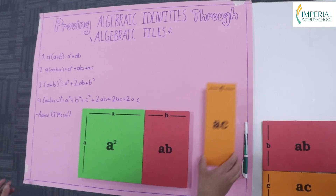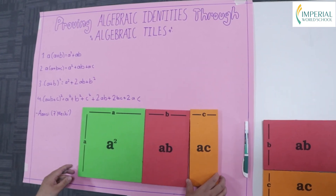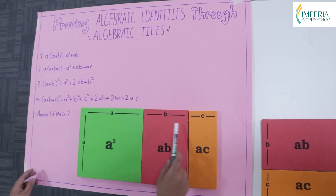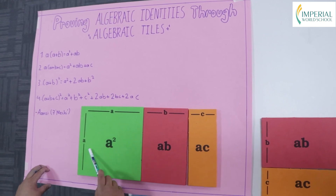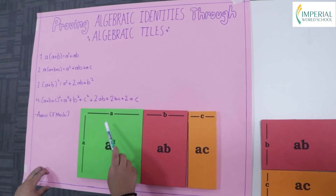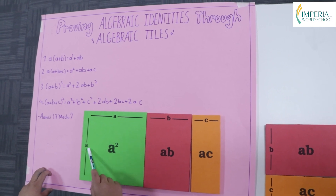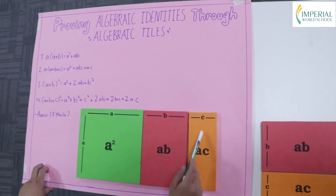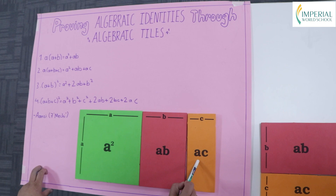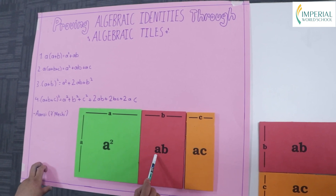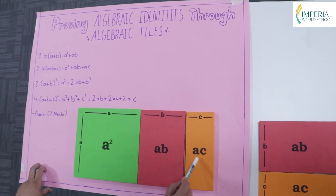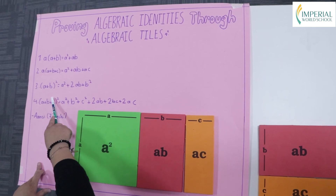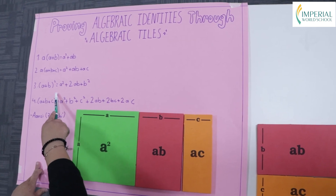Now let's add ac. Our length is now a + b + c and our breadth is a. So a times a is a², a times b is ab, and a times c is ac. Hence the identity a(a + b + c) = a² + ab + ac.